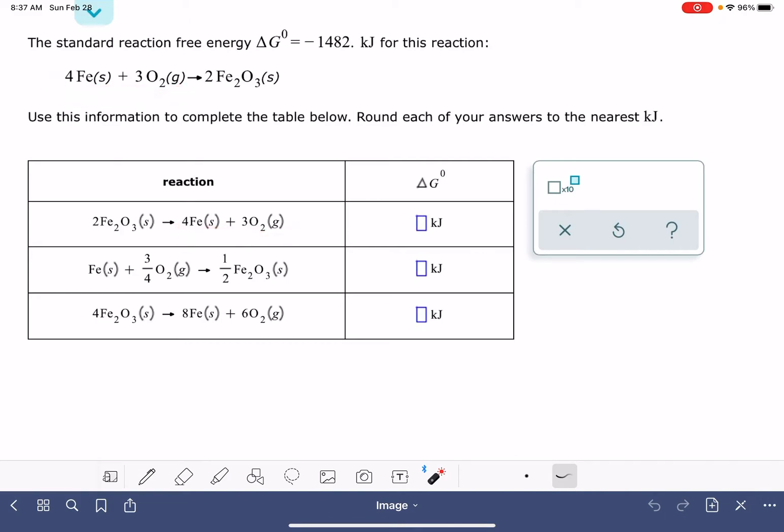When we turn a chemical reaction around, the delta G value simply changes in sign. So instead of negative 1482, this is positive 1482. This is exactly the same as what we have done in the past with delta H.